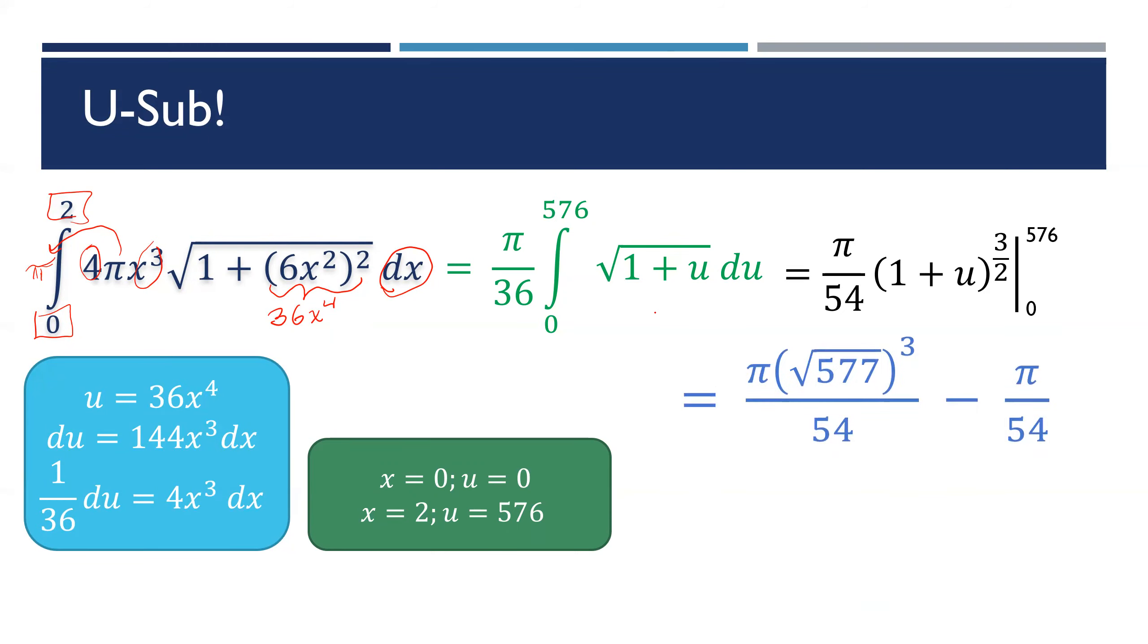When we plug in 576, we have √577 to the third power times π divided by 54 minus the part where you plug in 0, which gives you π/54. Throw that into your calculator, and that's how we got the 806.29 previously.